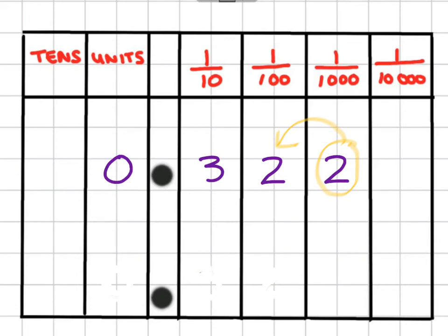Because 2, this 2 here, is smaller than 5, which means when we round to two decimal places for this number, we're only going to write 0.32. This remains the same because that couldn't change that. So our answer to two decimal places here is 0.32.